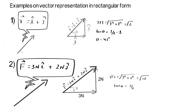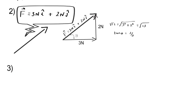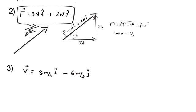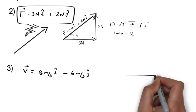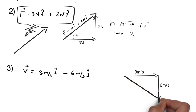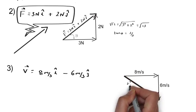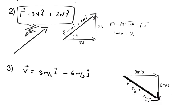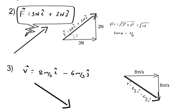Example 3: the velocity of a particle is given by V = 8 m/s î − 6 m/s ĵ. We first move 8 m/s in the X direction, then −6 m/s in the Y direction — that is, in the negative Y direction. The vector from starting point to ending point is V = 8î − 6ĵ m/s.